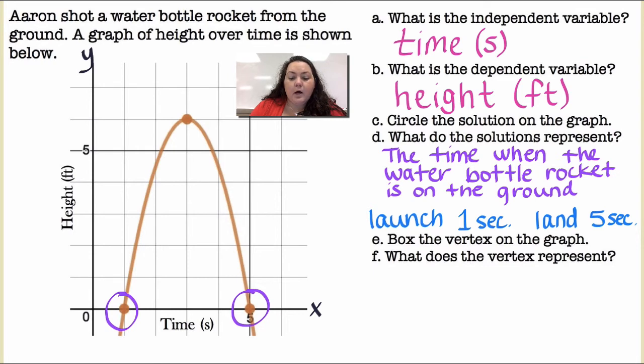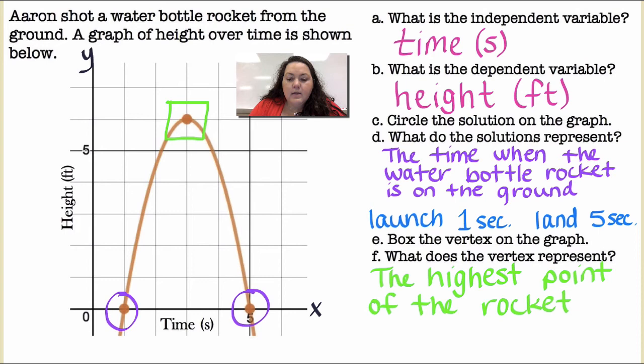Box, draw a box around the vertex of the graph. So the vertex would be here. And in this case, it's going from increasing to decreasing. Okay, what does the vertex represent? The highest point of the rocket. So the rocket went six feet at three seconds. So after three seconds had gone by, it reached the height of six feet. And then it started coming back down.